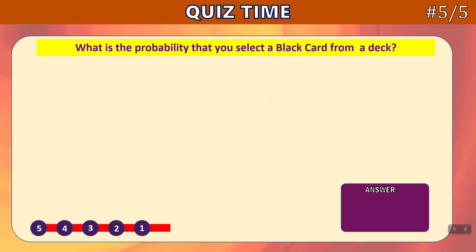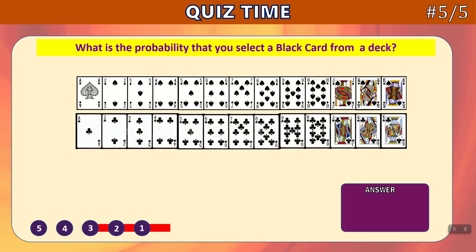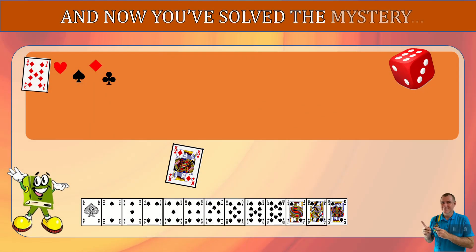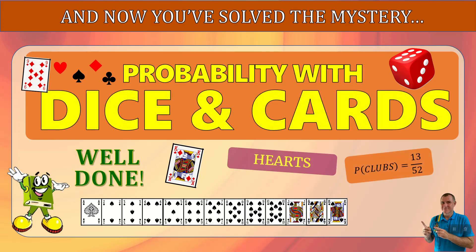Last question: What is the probability that you will select a black card from a deck? Time's up. The black cards are spades and clubs — there are 13 of each. 13 plus 13 is 26 out of 52 — that is your answer. And now you've solved the mystery behind using probability with dice and cards. Well done.